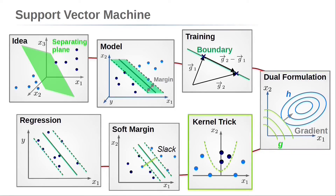The dual formulation is used to calculate highly nonlinear classification problems very efficiently. Thereby, the so-called kernel trick is used. Another possibility to generalize the support vector machine to account for nonlinearities is the soft margin. Finally, we learn how to apply the support vector machine to regression tasks.